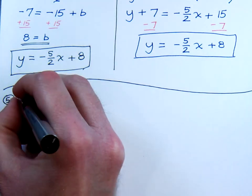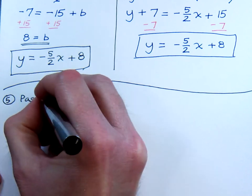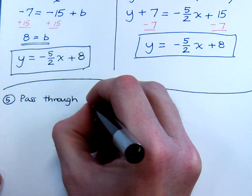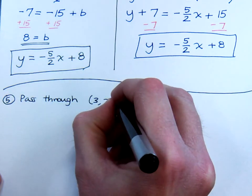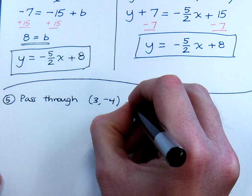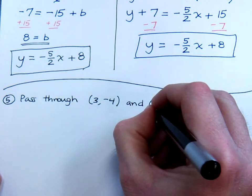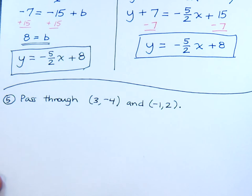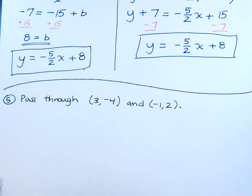Suppose I tell you this. I just tell you that this line is going to pass through. I want the equation of a line that passes through the points, 3, negative 4, and negative 1, 2. You need to find the equation of a line that passes through those two points. Everything we've been using up to this point has been using the slope, but we don't have the slope. But we can find the slope.